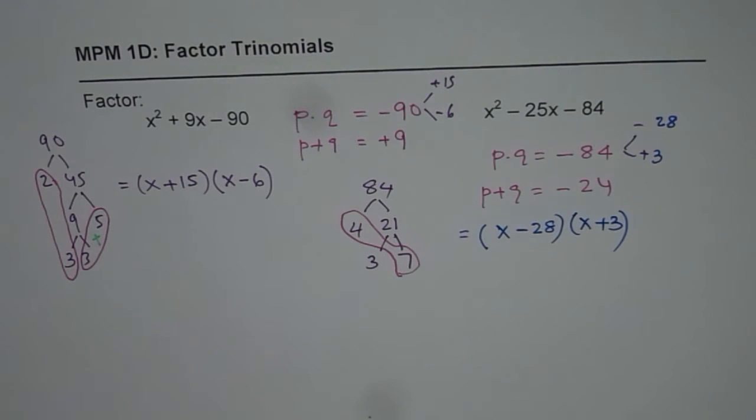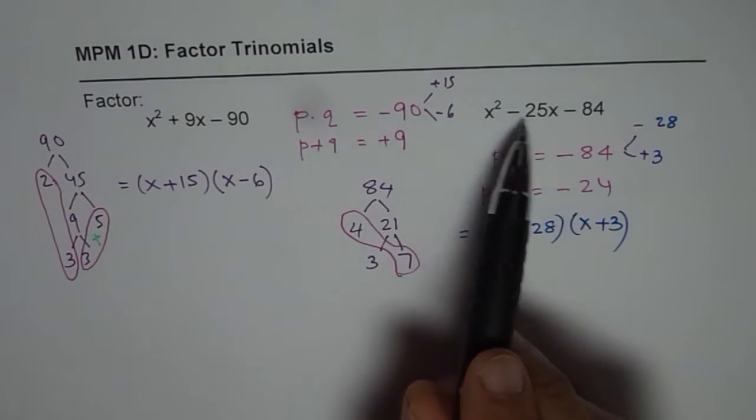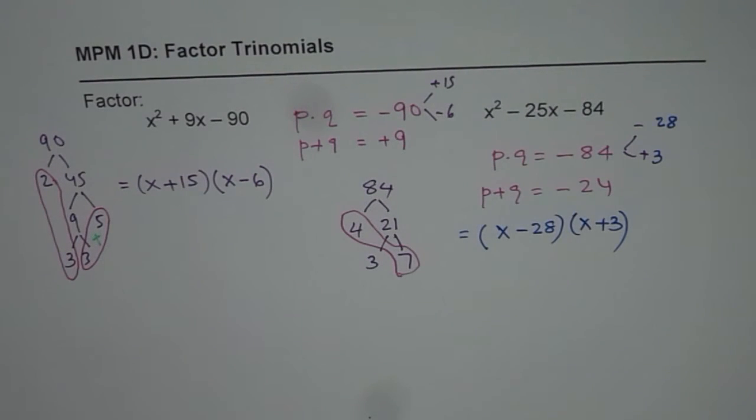I hope the strategy is kind of clear to you. So I will take examples two more examples with different combinations of plus and minus. And that should give you full idea about how to select the numbers quickly and factor a trinomial where the leading coefficient is 1. Thank you.